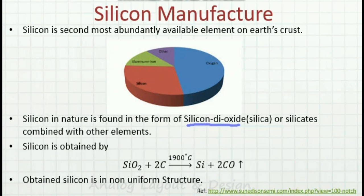Now we are looking into how to manufacture silicon wafers. Silicon wafers are made out of silicon, which is the second most abundantly available element in the Earth's crust. But that silicon is not available in the form of silicon itself — it is available in the form of silicon dioxide, which is called silica, and some compounds called silicates. This reaction will show you how silicon is obtained by what is known as the refinement process.